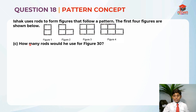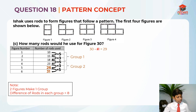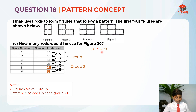So this is part C. How many rods will he use for figure 30? Now, 30 minus 1 equals to 29. Why do I do this? This 1 came from figure number 1. I take 30 minus 1 so that it will be easier for us to solve — we minus out the first figure first.